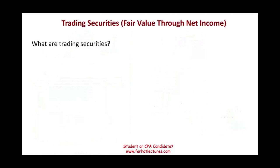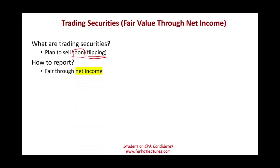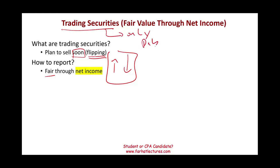So what are trading securities? Trading securities are securities investments that you plan to sell soon. Simply put, you are flipping — you want to buy them and sell them in the near future to make a profit. They are reported using fair value through net income. Fair value means the investment might go up or down in value, and as a result, you have to report those increases and decreases. For trading securities — and remember, only debt can be classified as trading securities — any adjustment goes into net income.